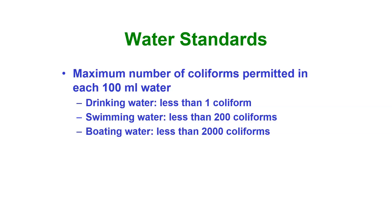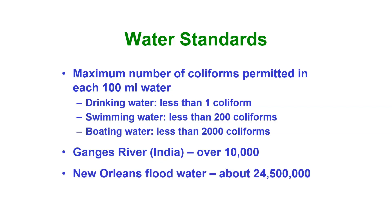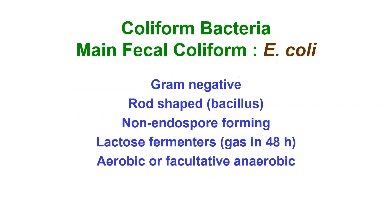Swimming water requires less than 200 coliforms, and boating water less than 2,000 coliforms. That's because in boating water you aren't drinking it, and when you're swimming you aren't necessarily drinking it either, so higher levels are permitted. For drinking water to be safe, we really want about one coliform or less per 100 mL. The Ganges River in India averages over 10,000 coliforms per 100 mL. The New Orleans flood water was estimated at about 24.5 million coliforms per 100 mL, which is extremely contaminated — that's why it was quite problematic to walk around in that water.